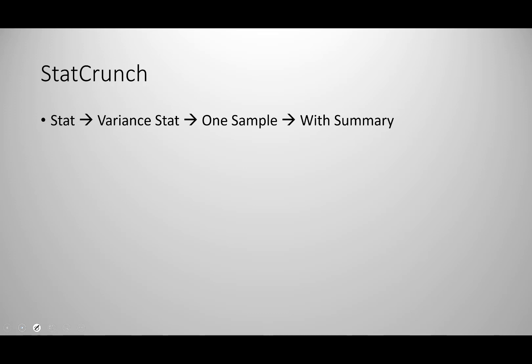StatCrunch will do this very quickly for you, but pay close attention to the numbers you enter and what the question is actually asking. In StatCrunch, go to Stat, then Variance Stats, then One Sample with Summary. Note that StatCrunch's Variance Stats works only with variances, so if the problem gives you a standard deviation you must square it before entering it, and then accommodate for that as you work through the problem.